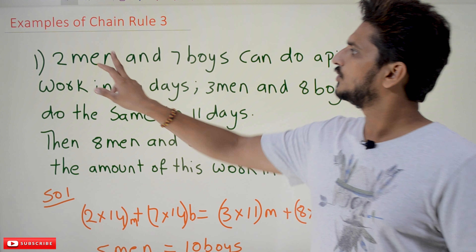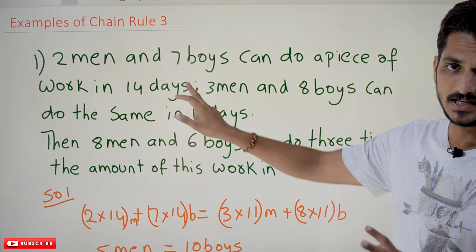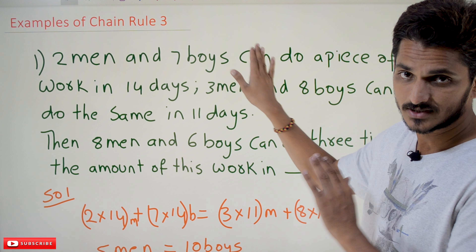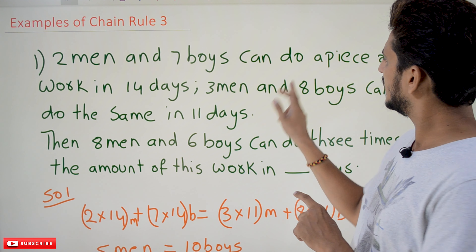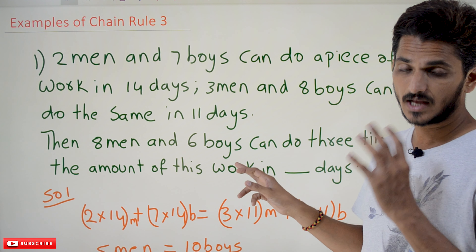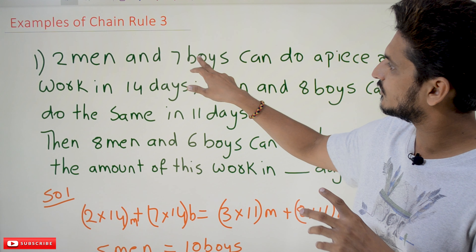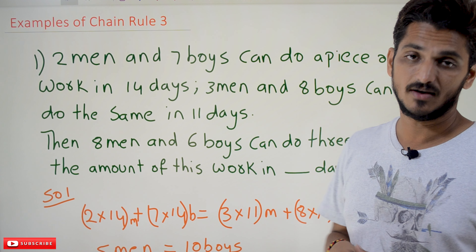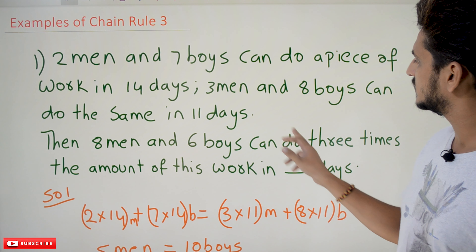Coming to today's class: two men and seven boys can do a piece of work in 14 days. Three men and eight boys can do the same work in 11 days. This is the given information.